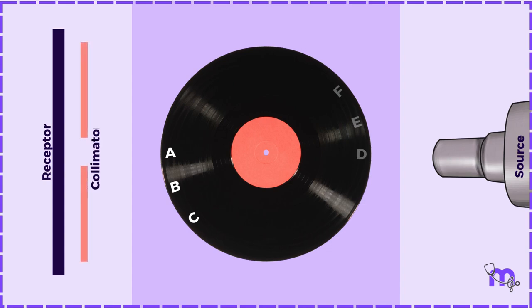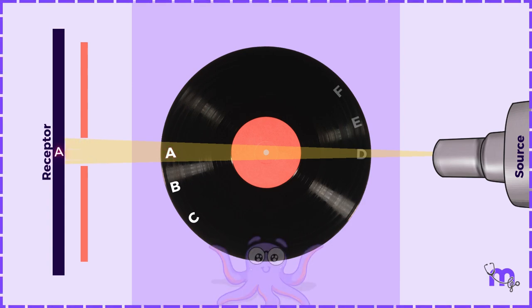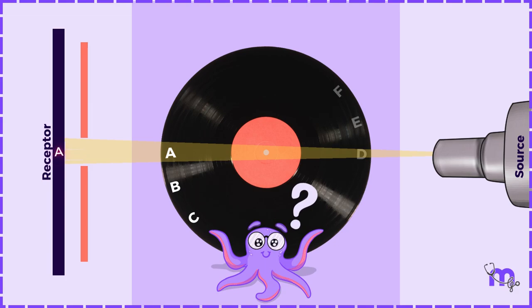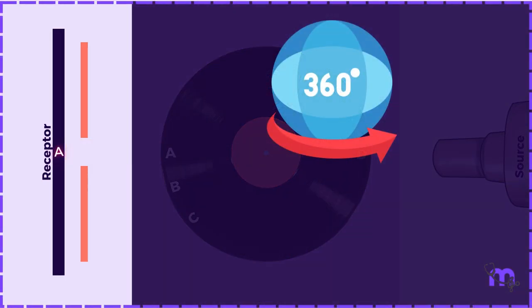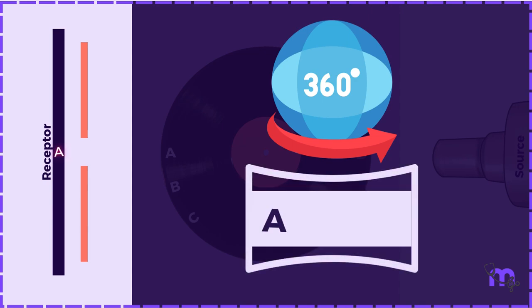A collimator is placed in front of the receptor. When object A is in the path of the X-ray beam, an image of object A is formed on the receptor. But is that the only image we want? No. We require a panoramic image to cover multiple objects A, B, and C.